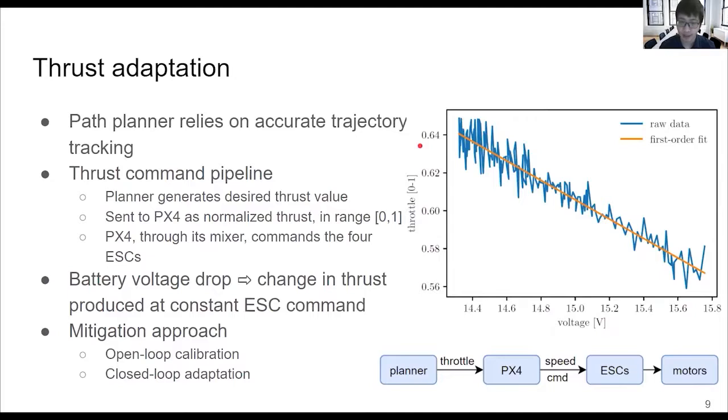This change in the required throttle values for the vehicle to hover, which was about 12 percent, is very bad for trajectory tracking because the path planner cannot get the thrust it wants. In cluttered environments, this is very problematic because when trajectory tracking is bad, the vehicle may hit obstacles and crash. To mitigate this problem, we propose an approach which involves open-loop calibration of the thrust plus closed-loop adaptation using IMU measurements.